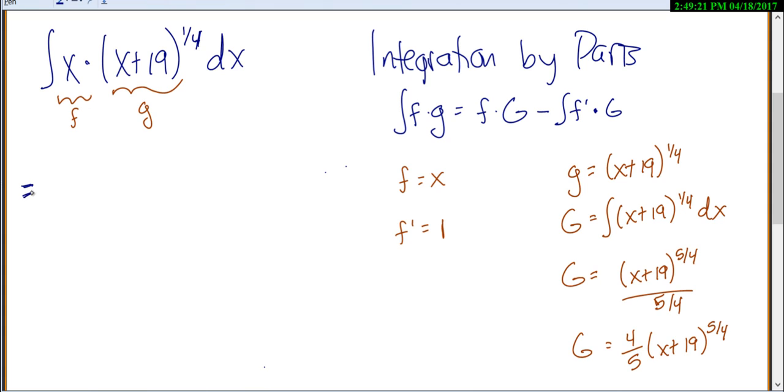So now, coming back over here, we've done all of our preliminary work over there. Let's go ahead and plug in. So we have the integral of f times little g, so now let's do little f times capital G. So f is x times our capital G, which was the integral of g, we have 4/5 (x plus 19) to the 5/4.